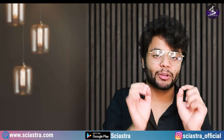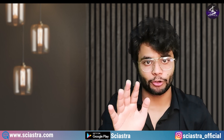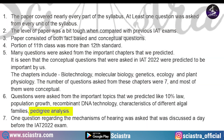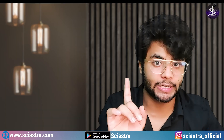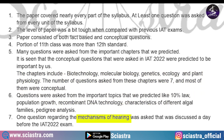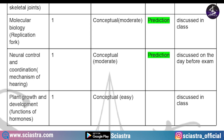For genetics, I told even non-bio students that genetics is very logical and questions will come from pedigree analysis and crosses — and indeed a conceptual, moderate-level question came from pedigree analysis, repeated from our mock test. From locomotion, a fact-based question came that was not predicted. From molecular biology, it was already discussed in class. From neural control, the mechanism of hearing was discussed one day before the examination and the question came in the actual IAT exam.